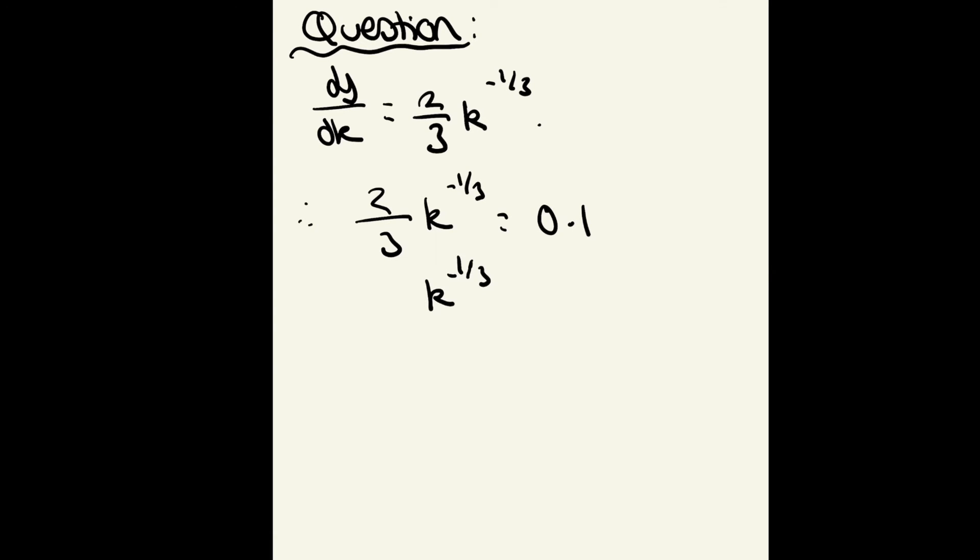It's just an algebra game to find k. Multiply by three and divide by two, so you're left with k to the minus third equals 0.3 over two. I don't want a negative power, so flip the fraction to make it positive: k to the third equals two over 0.3. Undo the third root by cubing both sides, so k equals two over 0.3 to the power of three.